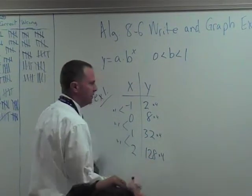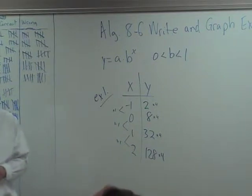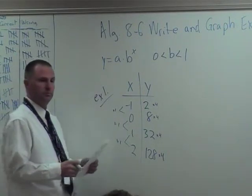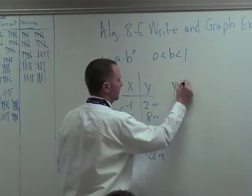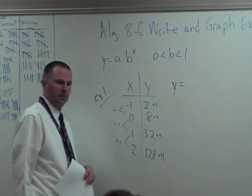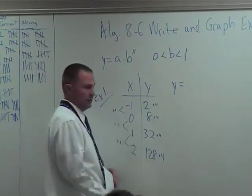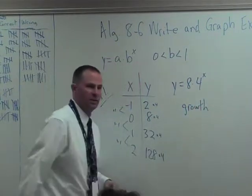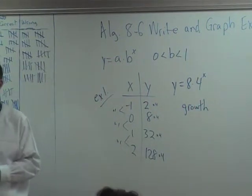What do we know about our a and our b? Tell me a and b. Find it the same way you did yesterday. Is the difference or what? What you multiply by. What's a? When x is 0, that's your a. So y equals 8 times 4 to the x. This is a growth example from yesterday. Everybody should have been able to do that.